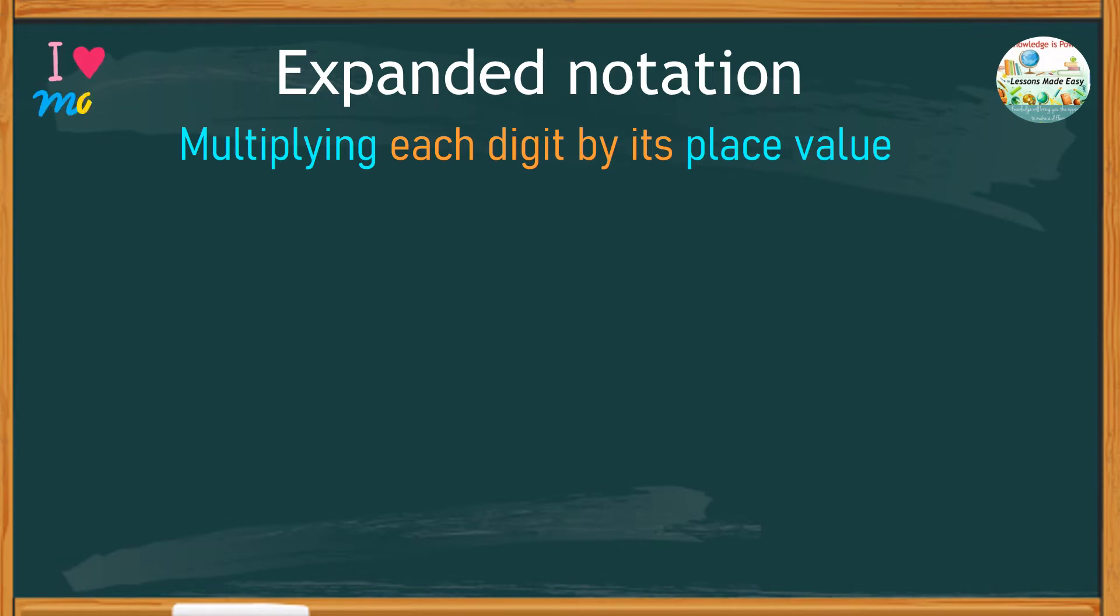But before we do expanded notation with decimal numbers, it is best to try expanding whole numbers first. How do you expand 7,296? We take one digit at a time and then multiply it by its place value.